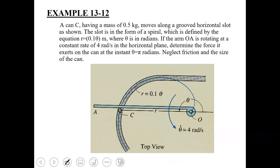Starting with the first example of today's lecture, which is Example 13-12. In this case, you have a can C with a mass of 0.5 kg and it moves along a grooved horizontal slot. The can is being pushed by arm OA which is rotating in a counterclockwise direction at a constant angular velocity.